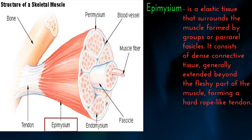Epimysium is an elastic tissue that surrounds the muscles, formed by groups of parallel fascicles. It consists of dense connective tissue, generally extended beyond the fleshy part of the muscle, forming a hard rope-like tendon.